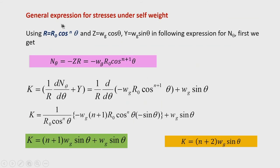To summarize the parameters of the different directrices: for circular directrix n equals 0; for cycloidal directrix n equals 1; for catenary directrix n equals minus 2; for parabolic directrix n equals minus 3. The equation of the curve is R equals R_0 cos^n(theta). The semi-ellipse cannot be expressed in this form and must be found from the general procedure by finding the radius of curvature through successive differentiation. Now let us find the general expression for stresses under self-weight using R equals R_0 cos^n(theta).